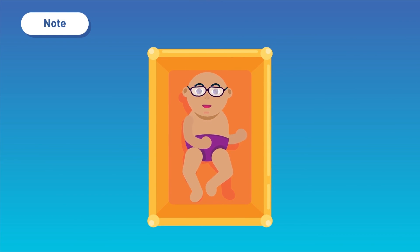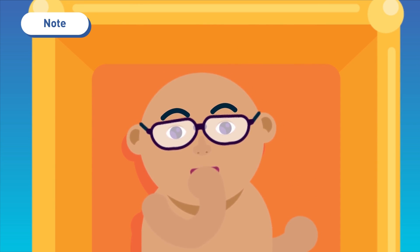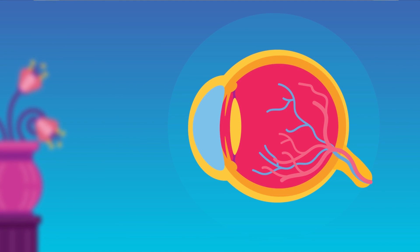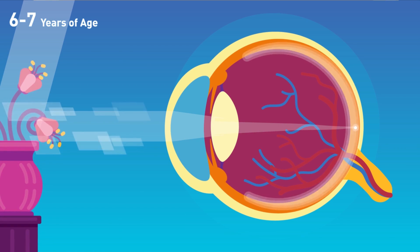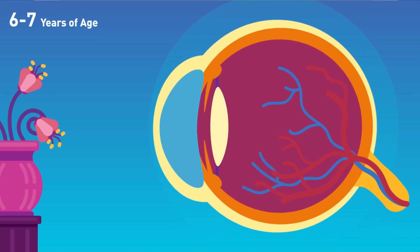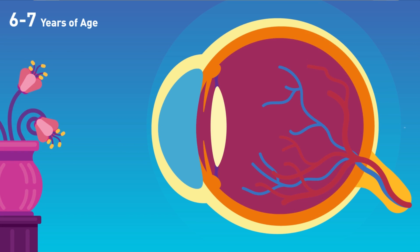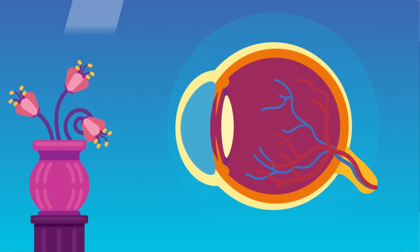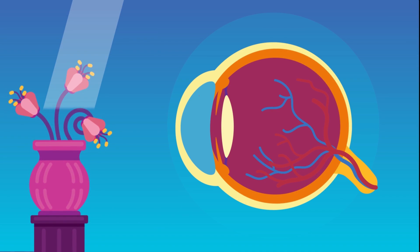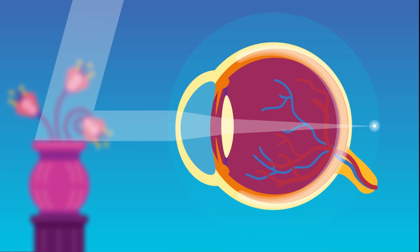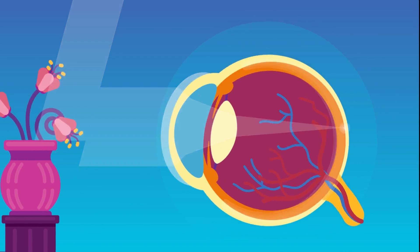Note: at birth, all eyes are hyperopic — plus 2.5 to plus 3 diopters — meaning light is focused behind the retina. As the eyeball grows, at about 6 to 7 years of age, the eyeball reaches normal size and light is focused on the retina (emmetropic). In some people it continues to grow, causing myopia. Treatment: maximum two-thirds of focusing in the eye is done by the cornea, while one-third is done by the lens. To treat hyperopia, we must increase the focusing power so the image forms on the retina instead of behind it. This can be done using a converging lens — glasses or contact lenses — or a surgical procedure.